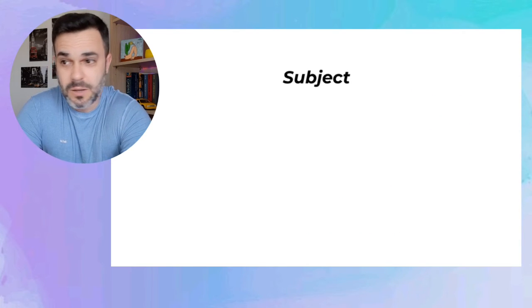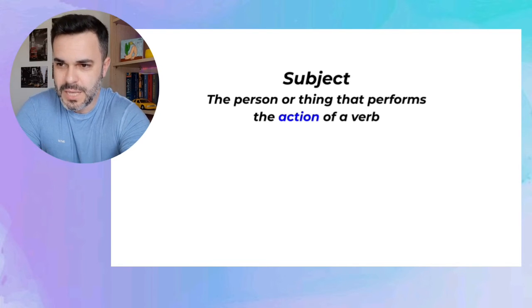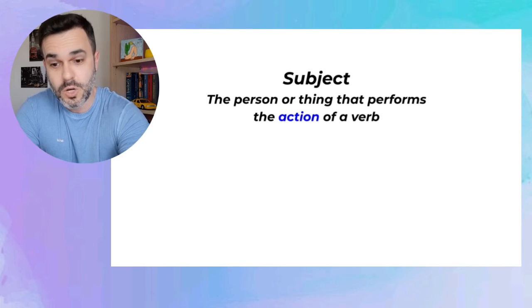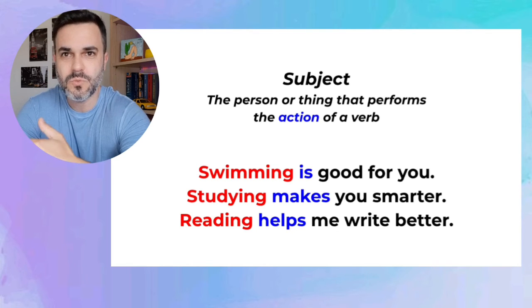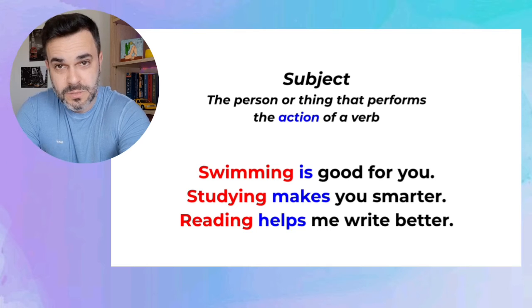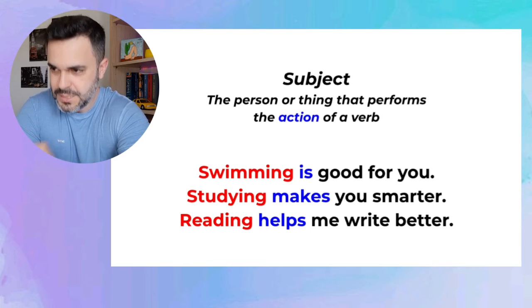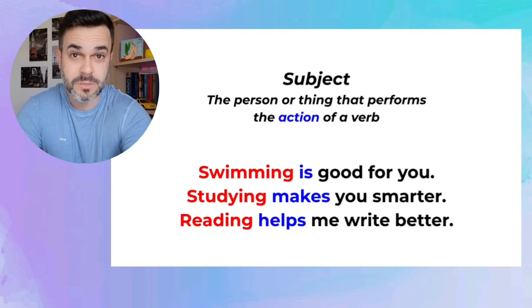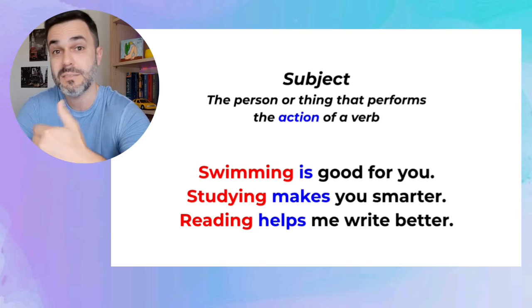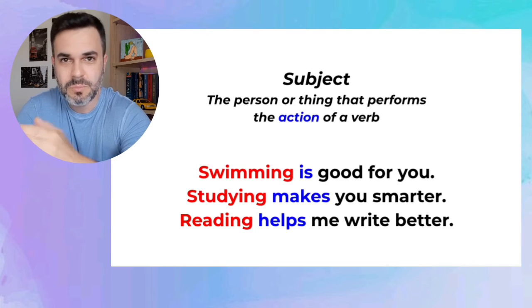Last step on the list: step number five — as a subject. A subject is the person or thing that performs the action of a verb. Check out these sentences: Swimming is good for you. Studying makes you smarter. Reading helps me write better. The words in blue are the verbs — is, makes, helps. The words in red are the subjects. What makes you smarter? Studying. Then studying is the subject. And when a verb is the subject, it has to be a gerund — verb plus ING.